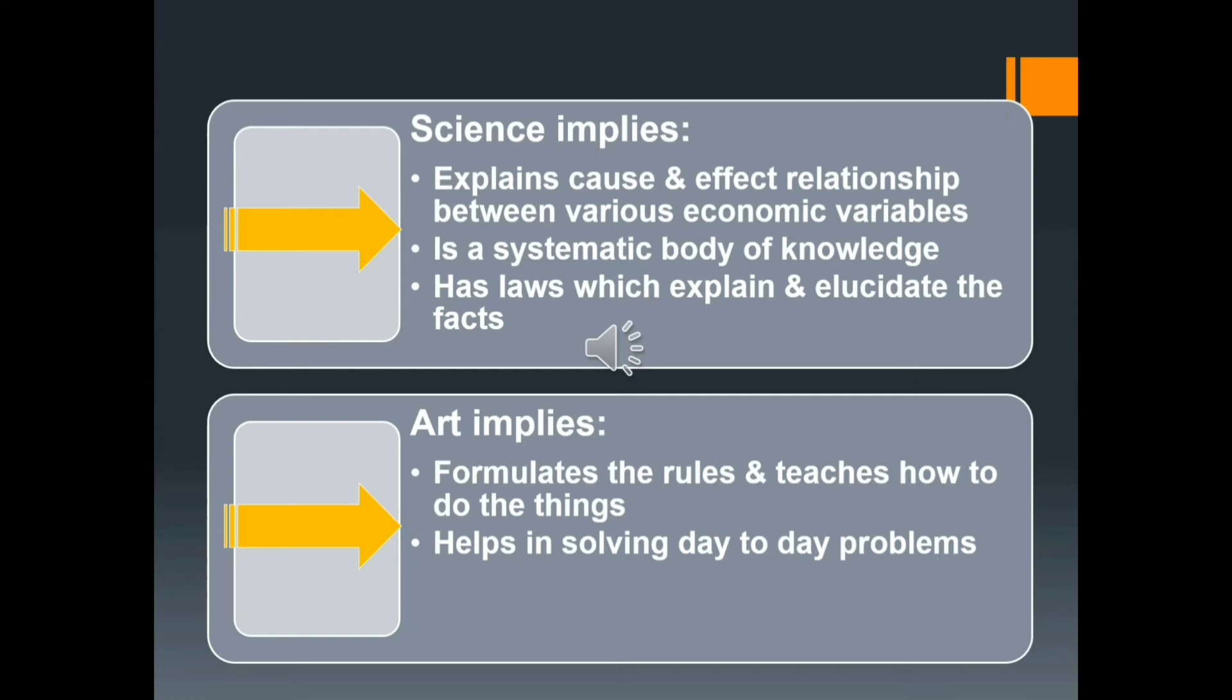If we expect a science to formulate laws applicable everywhere and to all times, then economics is not a science. In the words of Poincare, science is built up of facts as a house is built up of stone. But all accumulation of facts is no more a science than a heap of stone is a house. But economics possesses certain characteristics of a science. Firstly, it studies the cause and effect relationship of economic variables such as prices, demand, supply, production, national income, employment, etc.